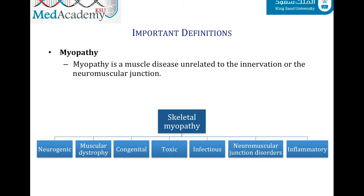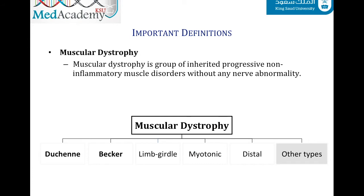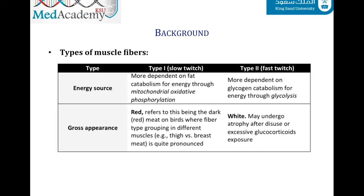Myopathy — 'myo' means muscle, 'pathy' means disease — includes any disease of muscle tissues, whether neurogenic, congenital, toxic, inflammatory, or due to muscular dystrophy. Muscular dystrophy is a group of inherited, progressive, non-inflammatory muscle disorders. The most common and important two are Duchenne and Becker muscular dystrophy, which will be discussed later.